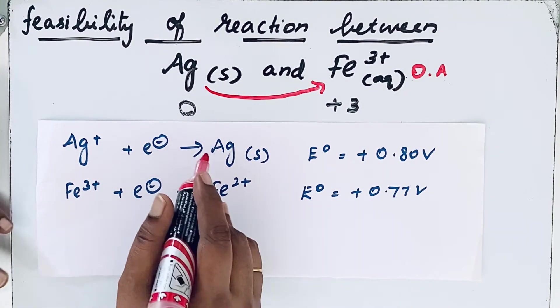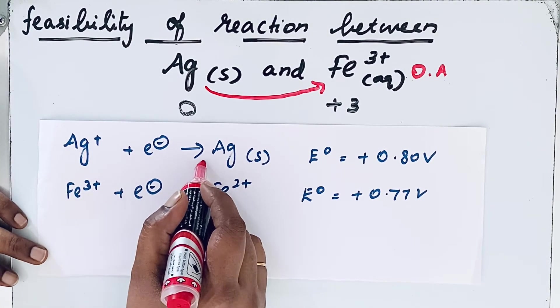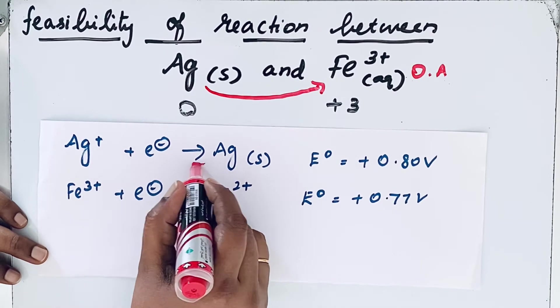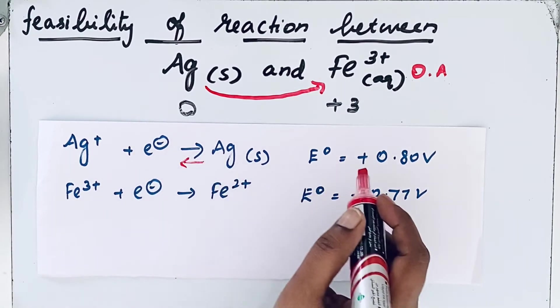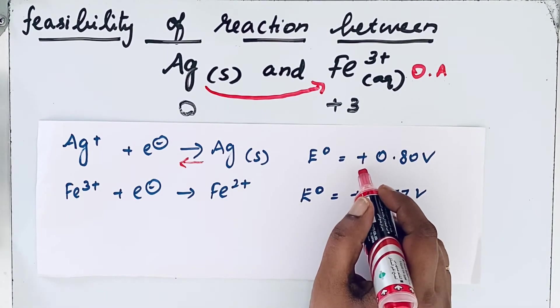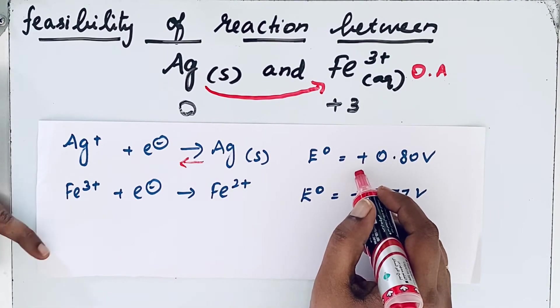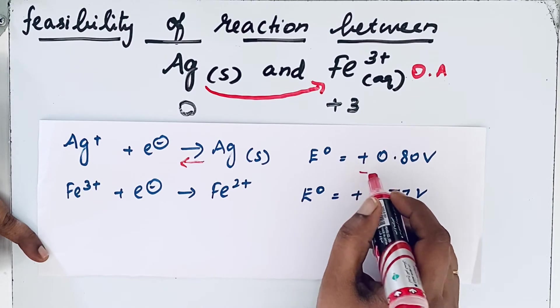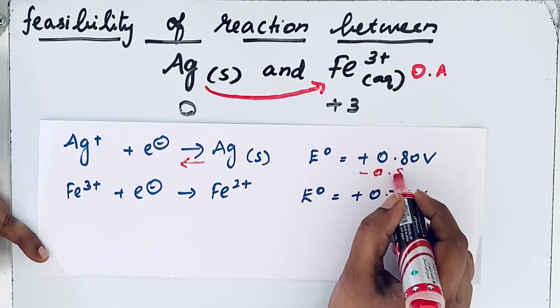So this reaction is taking place in the opposite direction. So there is a need to change the sign of electrode potential also. It is not plus 0.80 volt. It is minus 0.80 volt.